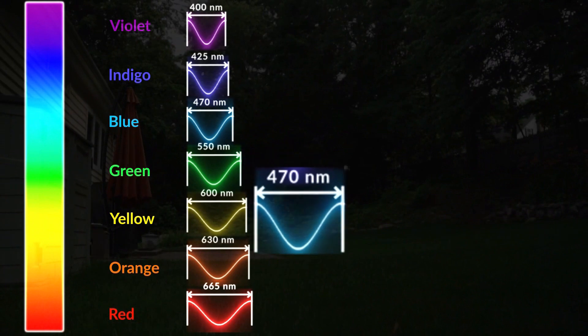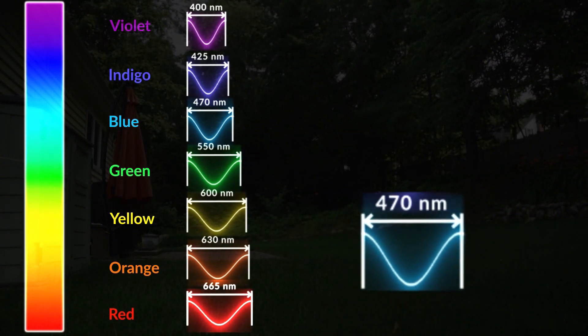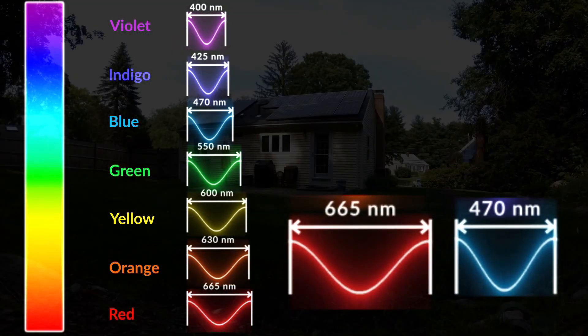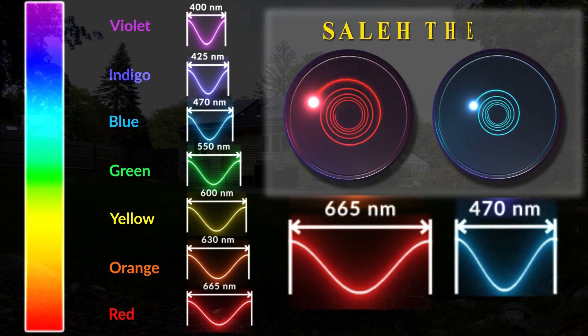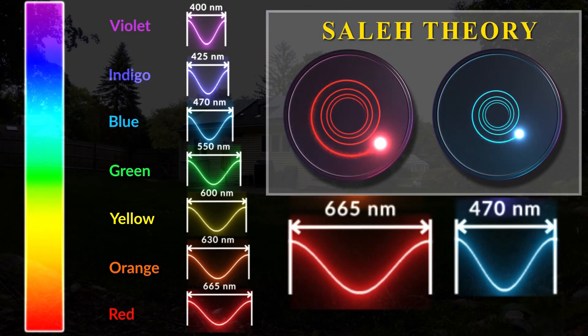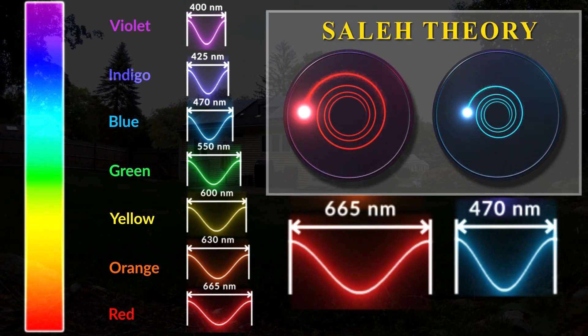But as mentioned in Saleh theory, the photons of red light due to their larger rotation radius have more rotational energy than the blue one. Therefore, it is natural for red light photons to show better efficiency in solar cells.